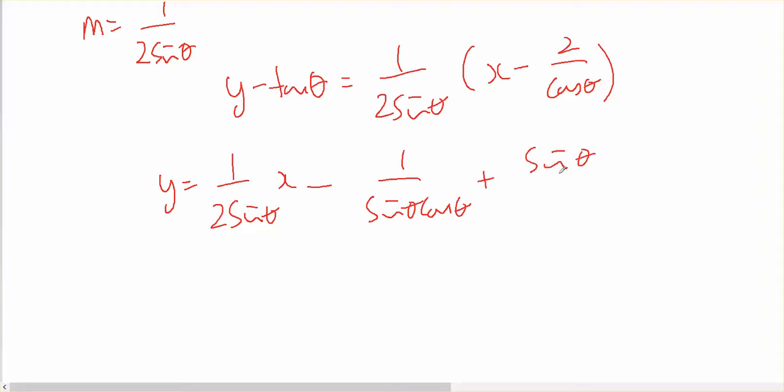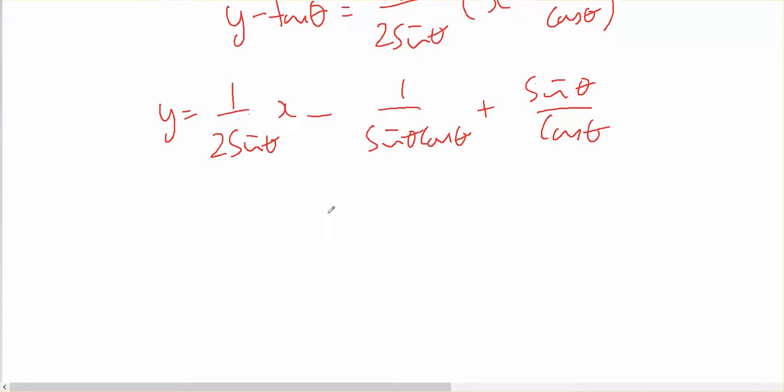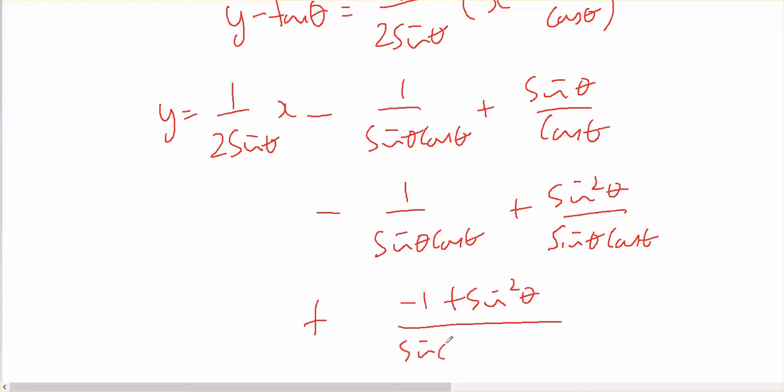Just playing with these for a little bit, minus 1 over sine theta cos theta, plus sine squared theta over sine theta cos theta, which is plus negative 1 plus sine squared theta, on top of sine theta cos theta.